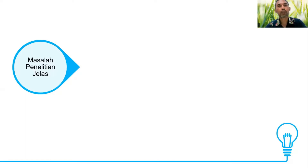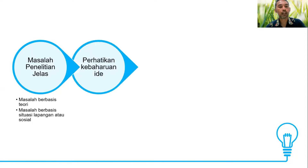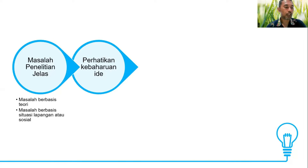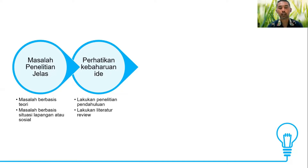Ketika kita menulis artikel, kita juga perlu memperhatikan apakah artikel kita memiliki kebaharuan ide atau tidak. Kita perlu melakukan penelitian pendahuluan dan melakukan literatur review terhadap banyak sumber literatur yang mempublikasikan penelitian-penelitian terdahulu. Kita bisa menggunakan berbagai aplikasi dalam proses menemukan kebaharuan-kebaharuan ide ini.